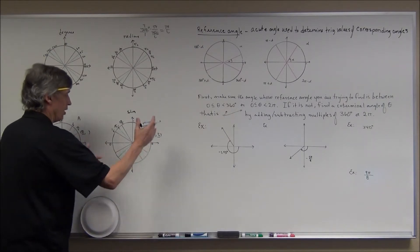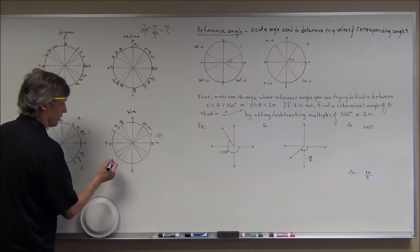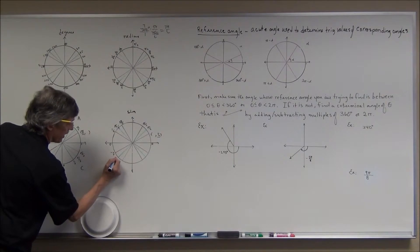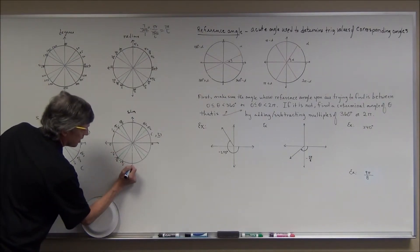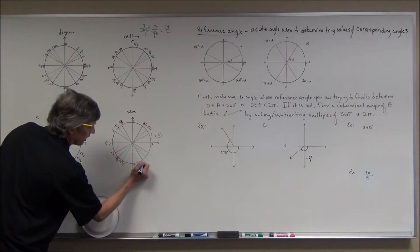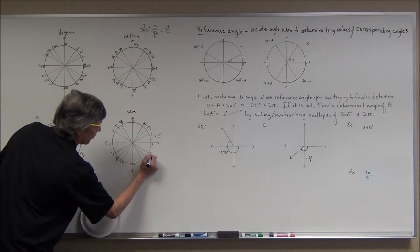Then you get all the negatives — the same numbers just reflected, and they're all negative: −1/2, −√2/2, −√3/2, −1, −√3/2, −√2/2, −1/2.